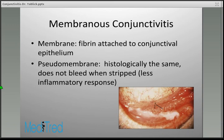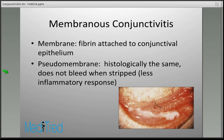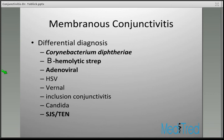There is another morphologic form called membranous conjunctivitis. Adenovirus can form membranes or pseudomembranes, and other conditions can as well. The difference between a true membrane and a pseudomembrane is whether it bleeds when stripped — histologically they are similar, but a more robust inflammatory response leads to bleeding on stripping. Several entities can cause this condition.